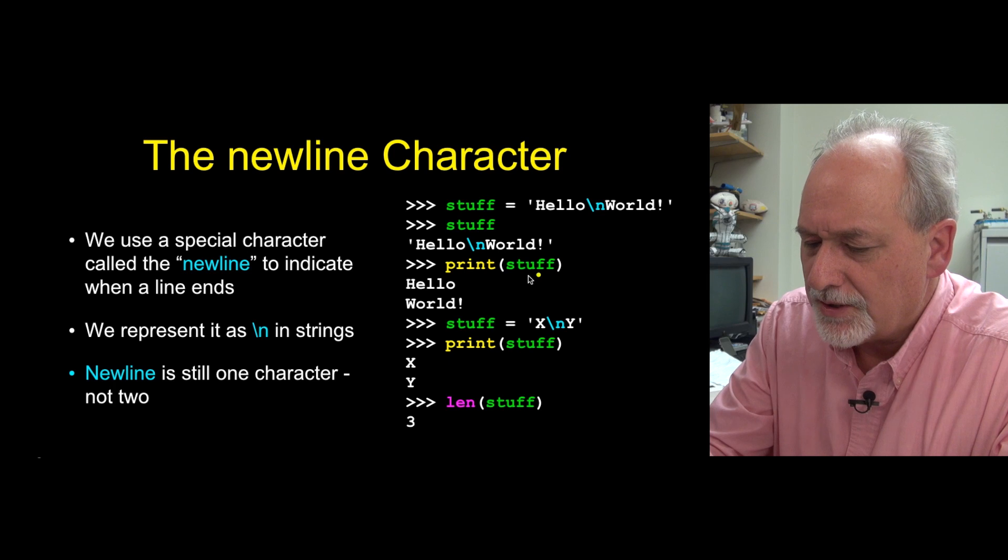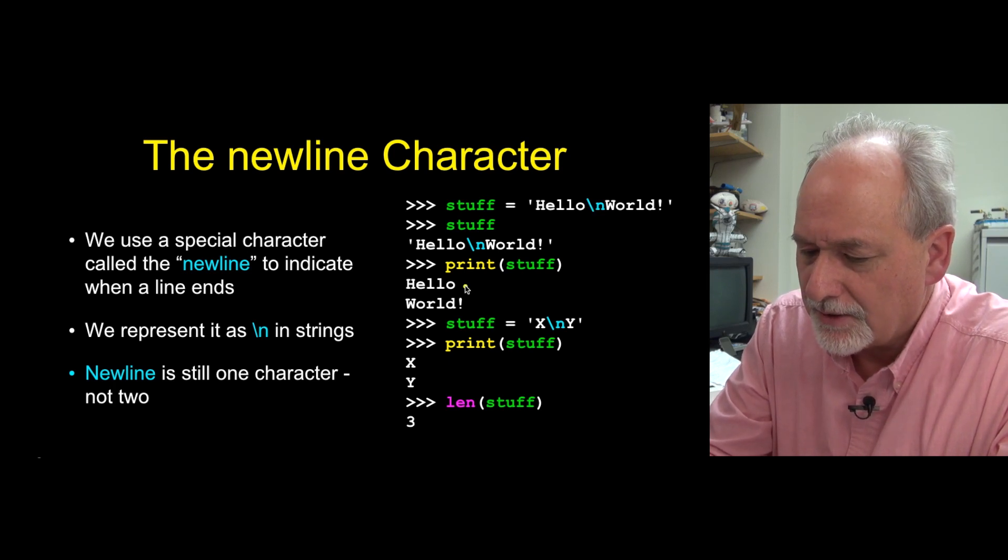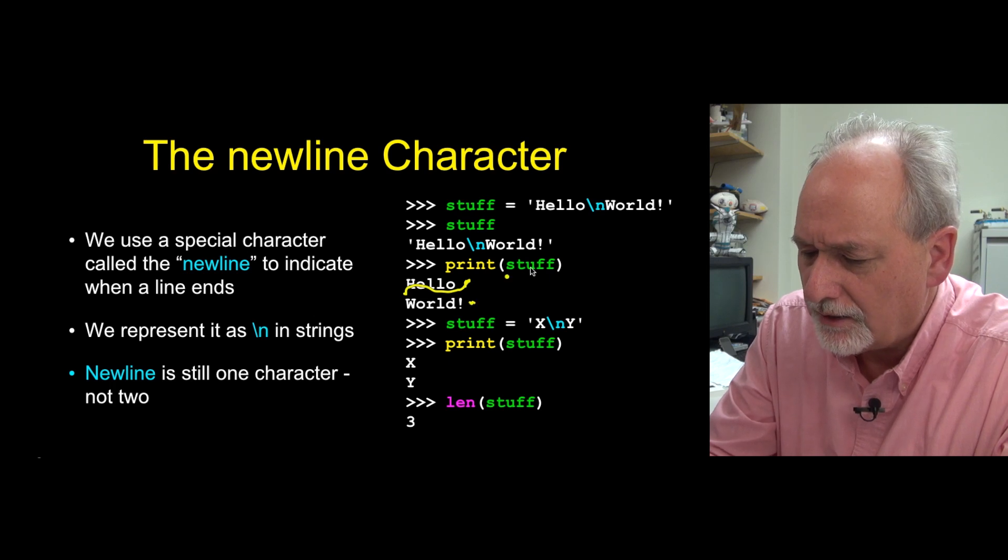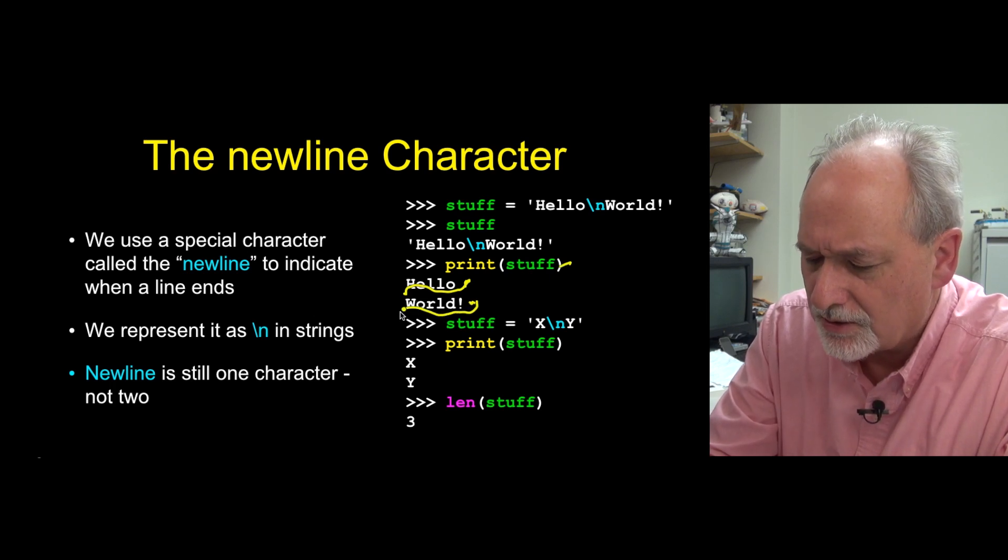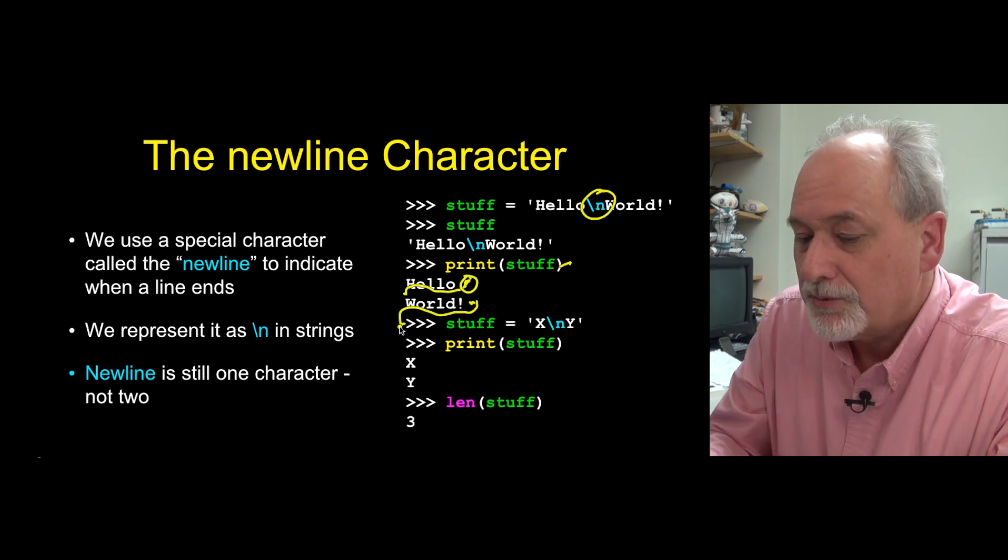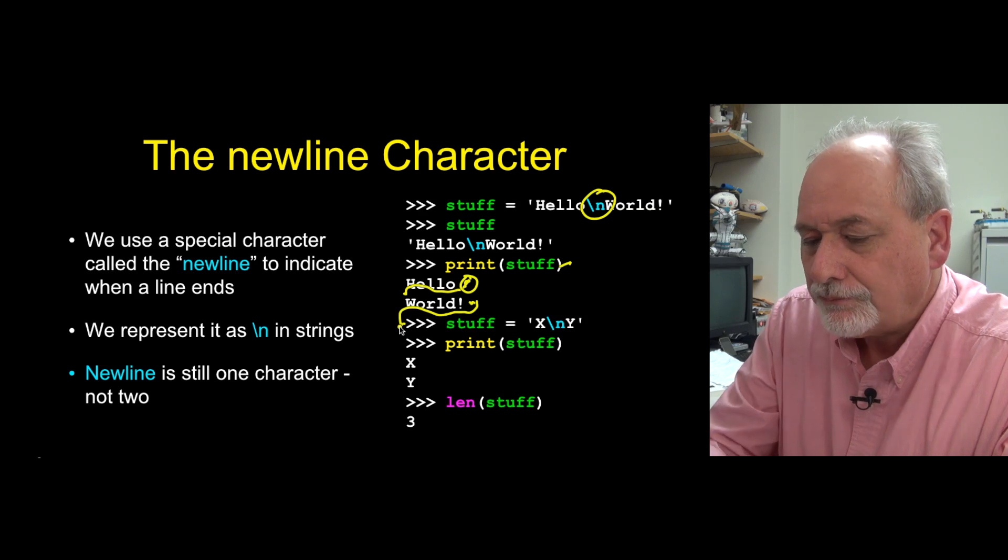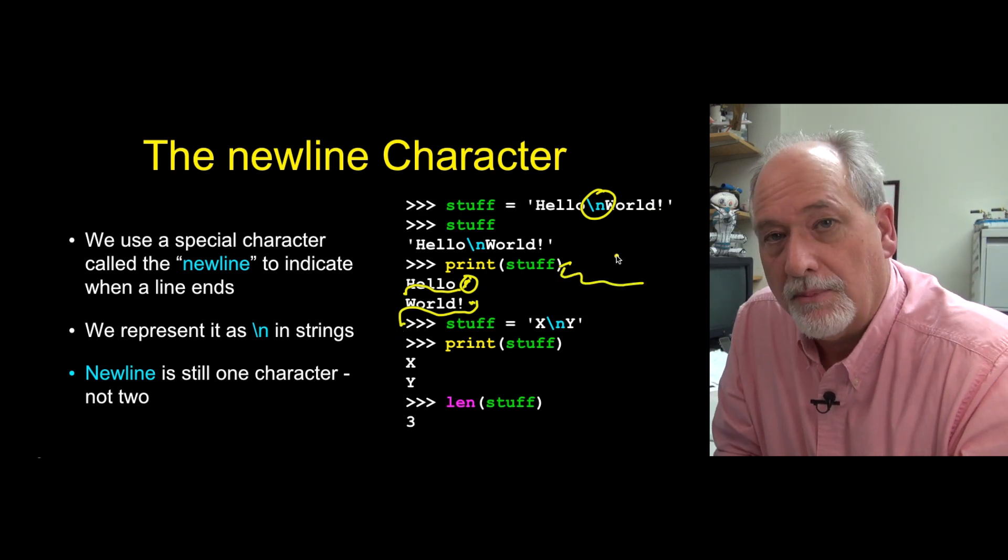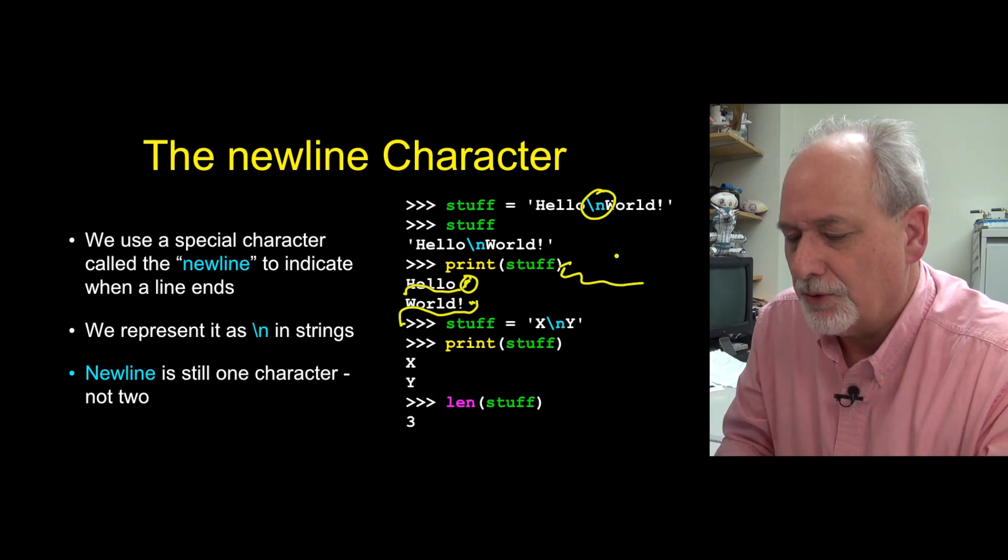But if we do a print statement, it actually interprets the backslash n, and so the backslash n causes kind of this movement to the beginning. Now, the print actually, at the end of this, adds another backslash n. So, the backslash n that we put in, by putting it into this string, is that one. And then print always puts a backslash n at the end. There's actually a way to override that backslash n behavior by putting something on the print statement, which we'll talk about later.